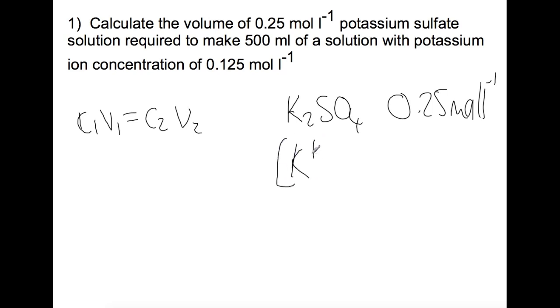However, that splits up into the three different ions, of which two of them are the potassiums. So your potassium ion concentration is actually two times this, which is 0.5. We are looking for potassium ion concentration at the end, so we're best to start with that now. So we have 0.5 times volume and we're trying to make a potassium ion concentration of 0.125 times the volume.